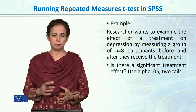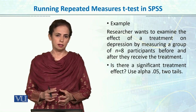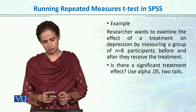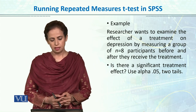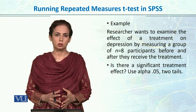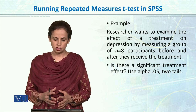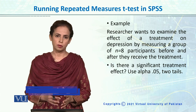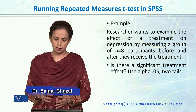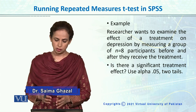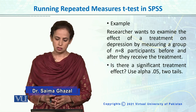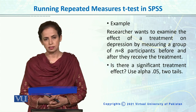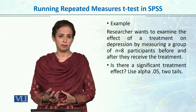Let's take an example and run the repeated measures T-test in SPSS. A researcher wants to examine the effect of a treatment on depression by measuring a group of eight participants before and after they receive a treatment. Is there a significant effect of the treatment? Test the hypothesis at the alpha 0.05 level.